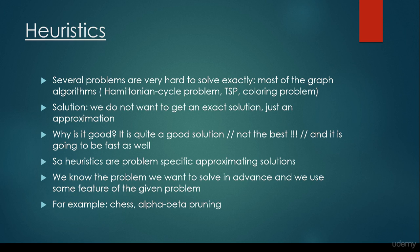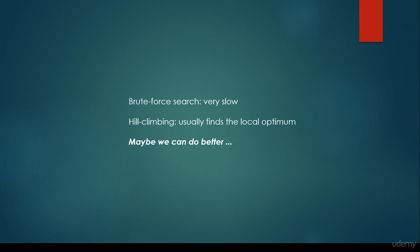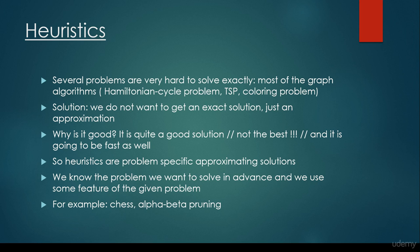The solution is that we don't want to get an exact solution — we just want to end up with an approximation of the solution. Why is it good? Because it is quite a good solution; it's not the best, but it is approximately the best, and on the other hand it's going to be very fast. This is the trade-off compared to brute force search, which is going to find the best solution possible but is not going to be fast. A heuristic algorithm is going to find approximately the best solution and on the other hand it's going to be fast.